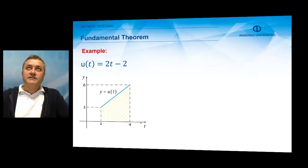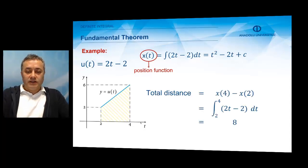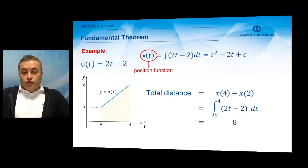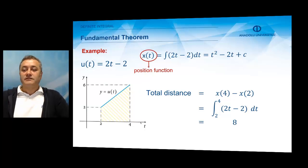What is the total distance we traveled between time t equals 2 and t equals 4? If x of t is the position function, all we need to do is integrate the velocity function, which is 2t minus 2, from t equals 2 to t equals 4. The antiderivative of 2t is t squared, and the antiderivative of minus 2 is minus 2t — we know this from Mathematics 1. The total distance is x(4) minus x(2), and when you calculate and substitute into this function, you find the result to be 8. So we used integration to find the total distance traveled.